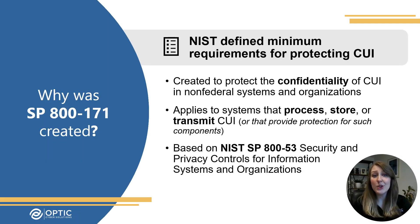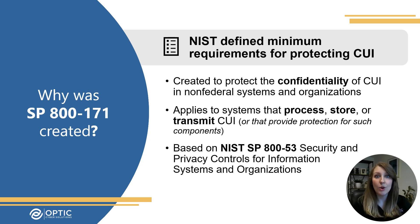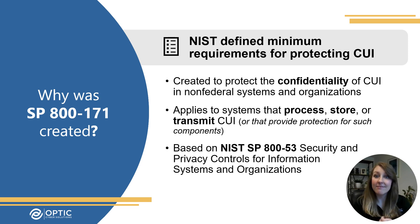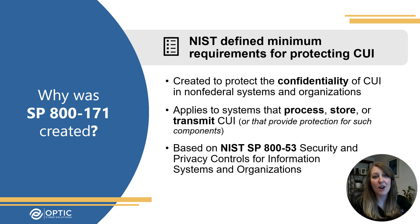So let's start with the questions: what is it and why was it created? NIST SP800-171 is for protecting Controlled Unclassified Information, or CUI, in non-federal systems and organizations. Since CUI is unclassified US government information requiring safeguarding and controlling, this document defines the minimum requirements for protecting it to ensure its confidentiality when it's stored, processed, or transmitted outside of those government systems.